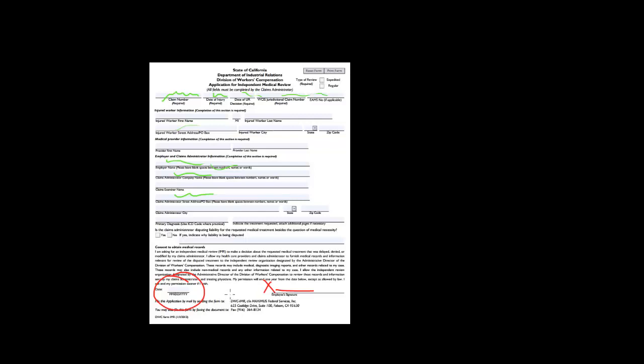You can send it to this address listed here or you can fax it to this number. So once you send it in, the Division of Workers' Compensation will review your request and they'll start asking the insurance company for records. And that's how you initiate the IMR process.